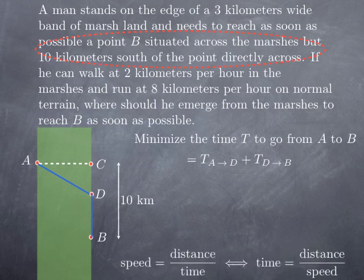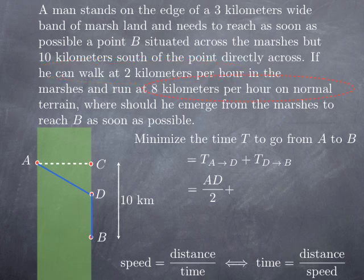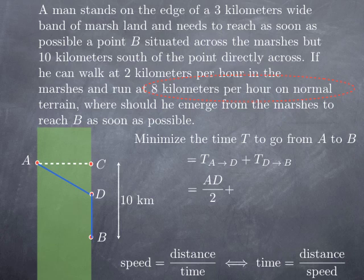What is the time to go from A to D? Because from A to D the man is moving at constant speed, and at constant speed we know that speed is distance divided by time. In other words, the time required to cover a given distance is distance divided by speed. So the time to go from A to D is the distance AD divided by 2 (since he walks at 2 km per hour in the marshes). On the other hand, from D to B he can run at 8 km per hour on normal terrain, so the time to go from D to B is the distance DB divided by 8.